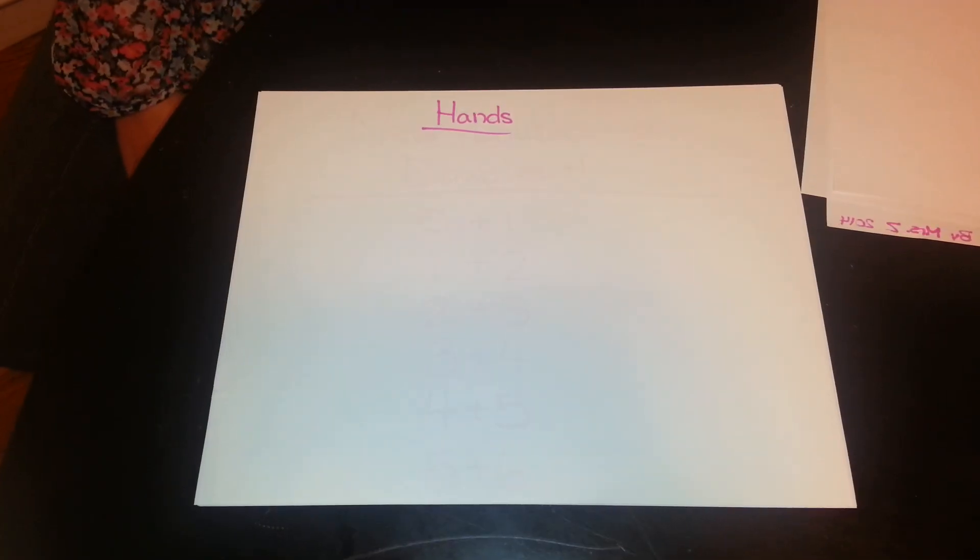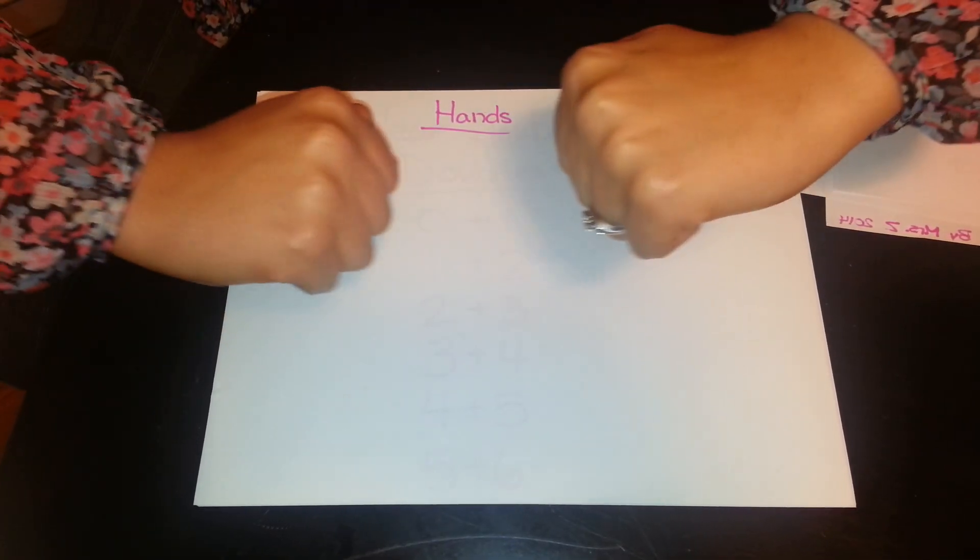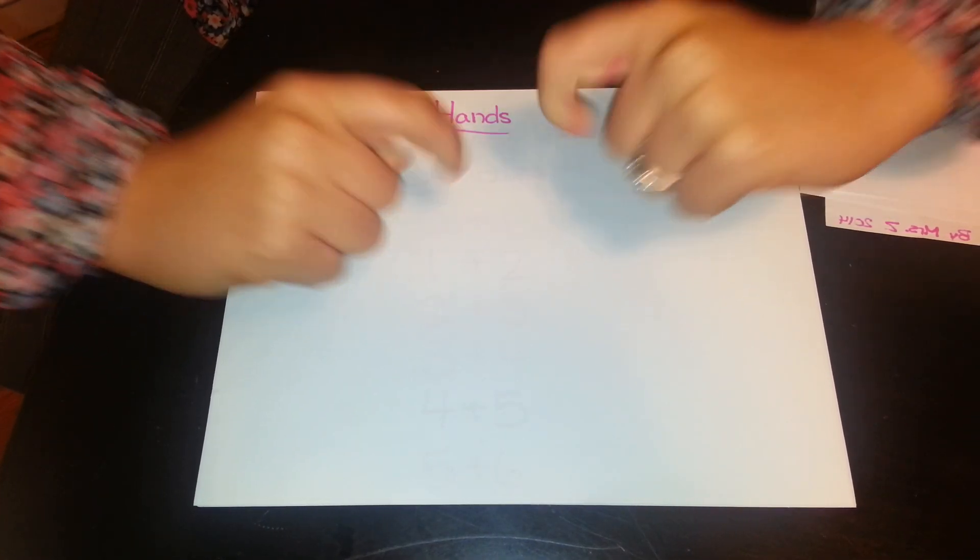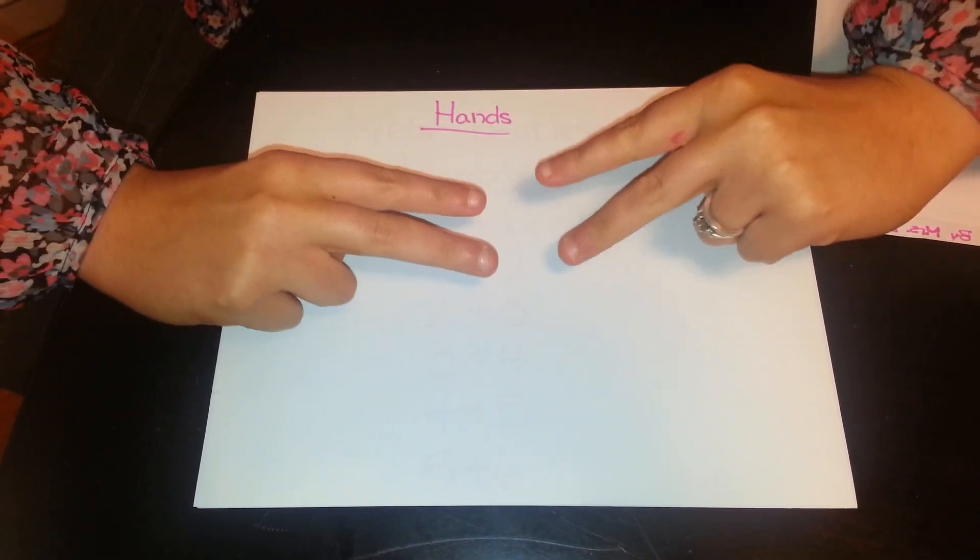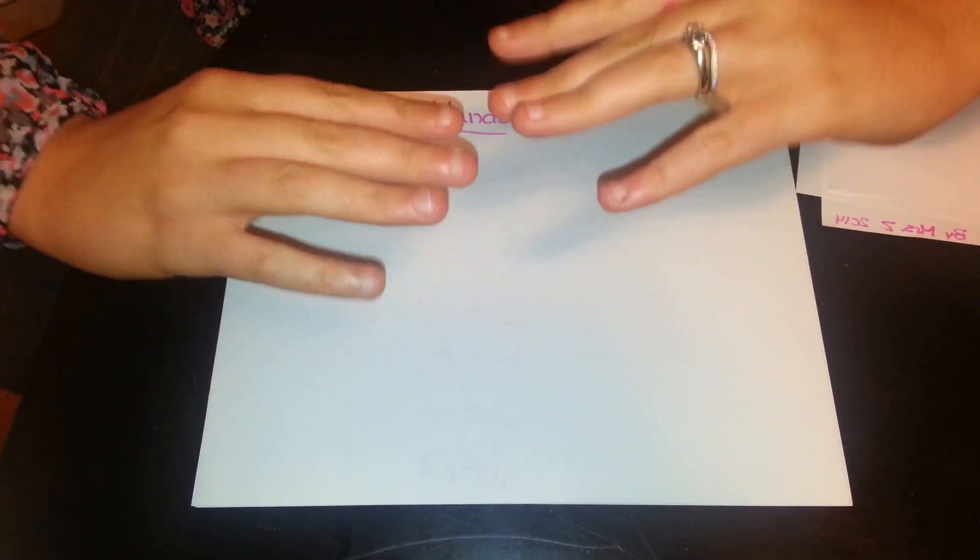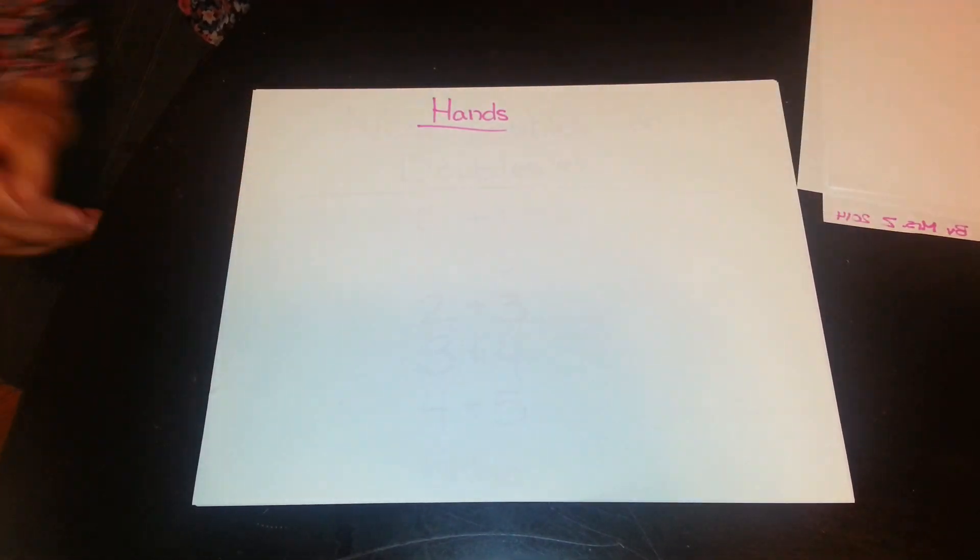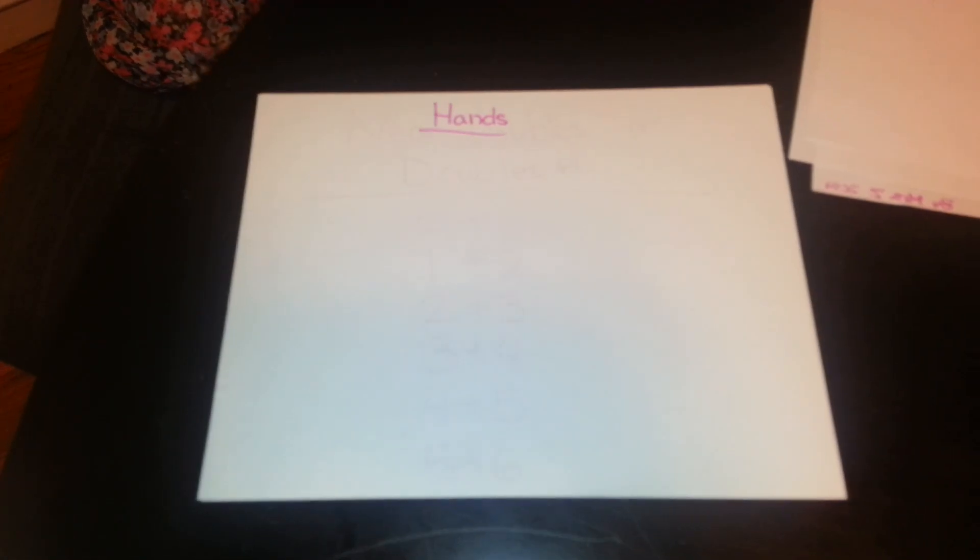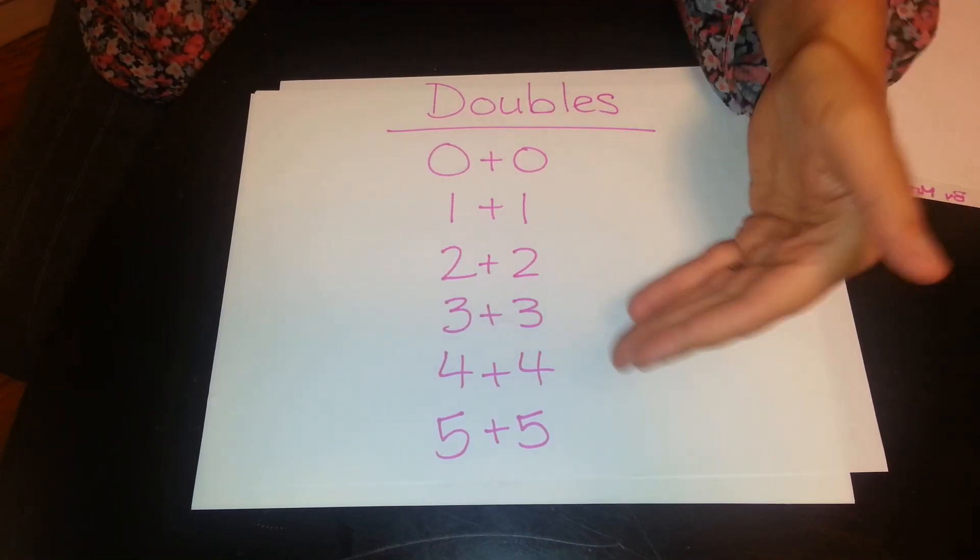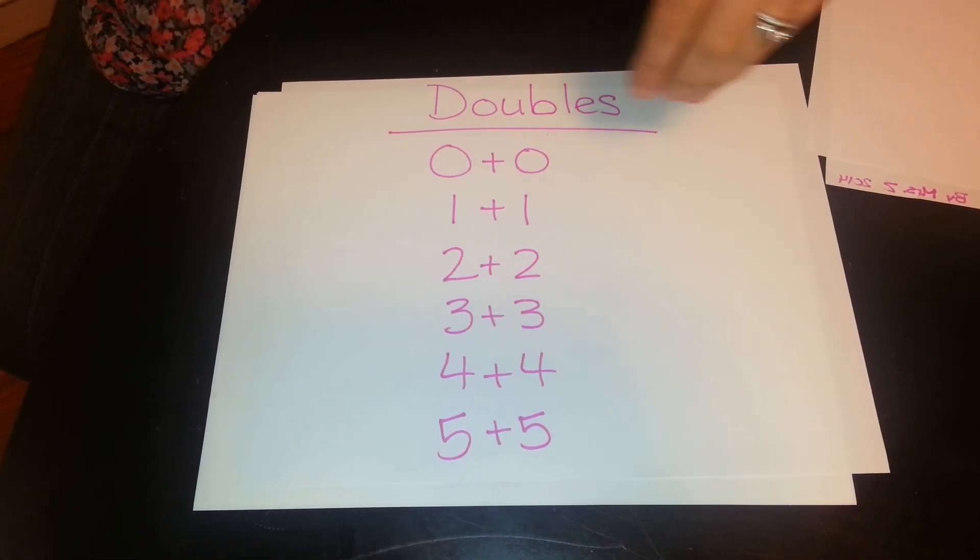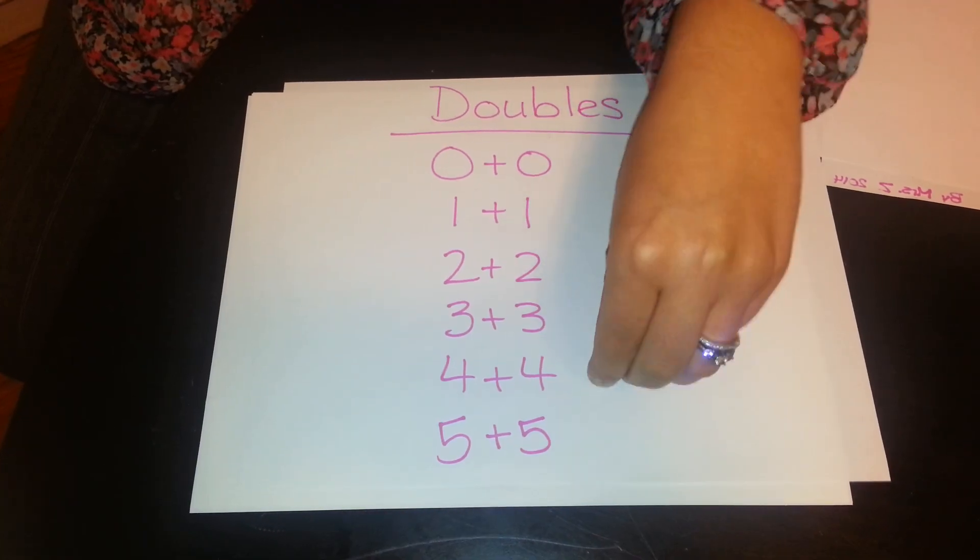To help reinforce and memorize those facts we do 0 plus 0 is 0, 1 plus 1 is 2, 2 plus 2 is 4, 3 plus 3 is 6, 4 plus 4 is 8, 5 plus 5 is 10. We also have written them many times to reinforce that it is counting by 2's, it is the even numbers so the answers are 0, 2, 4, 6, 8, 10.